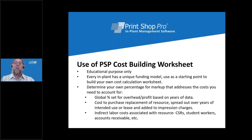To determine your own percentage markup that addresses the costs you need to account for, you might want to look at a global percentage for overhead and profit based on years of data. Or you can use the cost to purchase equipment spread out over years of intended use or lease and add that to the impression charges. You can also add the indirect labor costs associated with that resource — which includes your CSRs, student workers, and accounts receivable — which is not included in your other calculations.